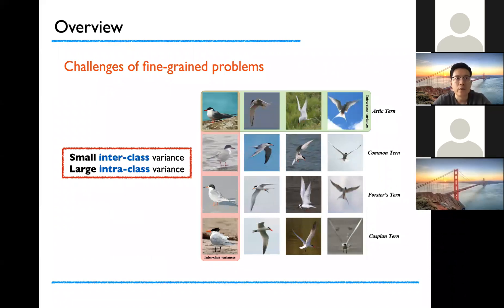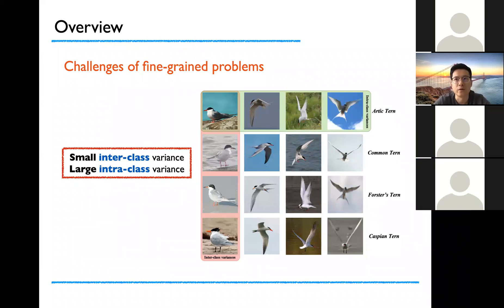Now for fine-grained problems, since objects typically come from the subordinates of the same meta category, the fine-grained nature of the problem causes them to be visually similar. The fine-grained nature of the problem is challenging because of the small inter-class variations caused by a highly similar sub-category, and the large intra-class variations in poses, scales, and rotations. It is as such the opposite of generic visual analysis, which also makes fine-grained visual analysis a unique and challenging problem.